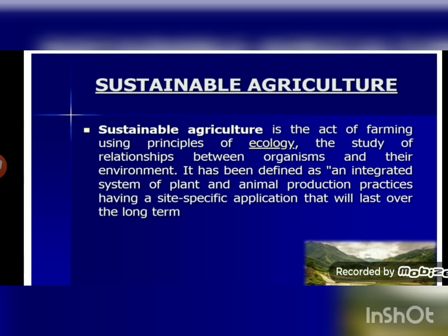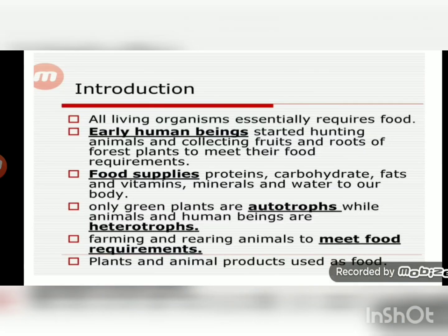Sustainable agriculture is the act of farming using principles of ecology — the study of relationships between organisms and their environment. It has been defined as an integrated system of plant and animal production practices having a site-specific application that will last over the long term. By sustainable agriculture we can increase our production of food through various ways and sources.